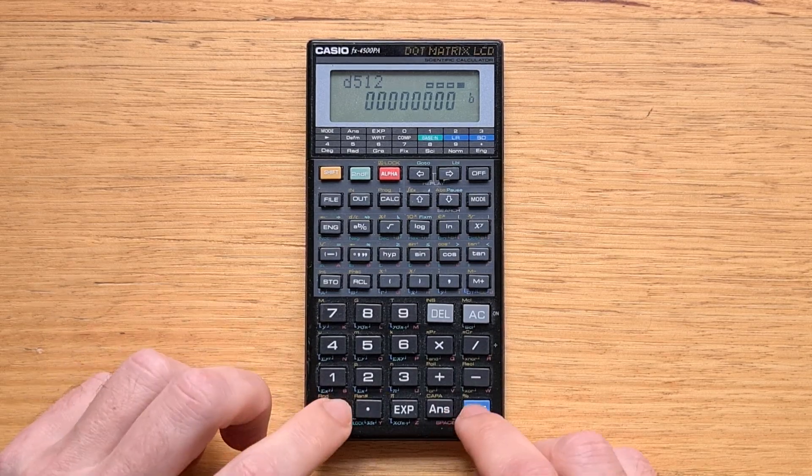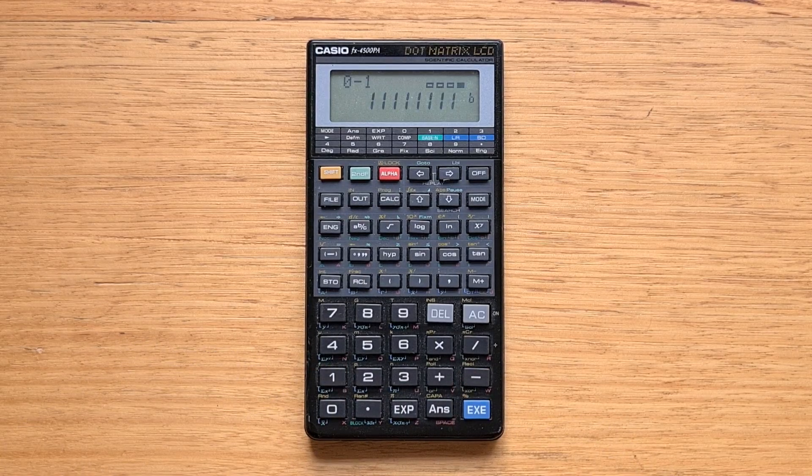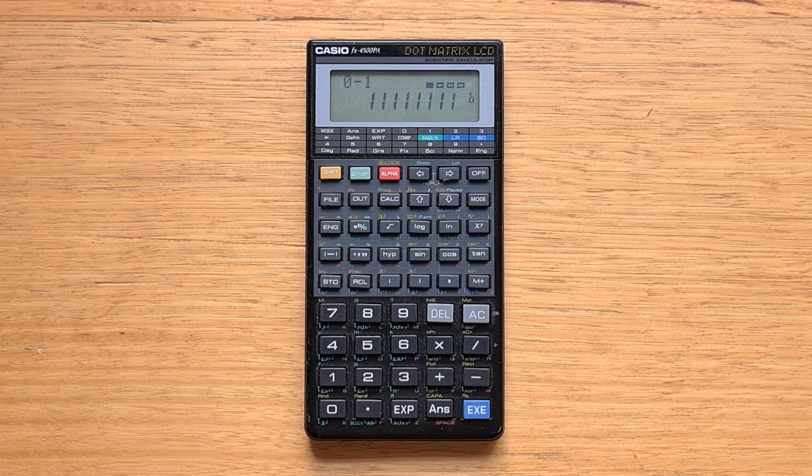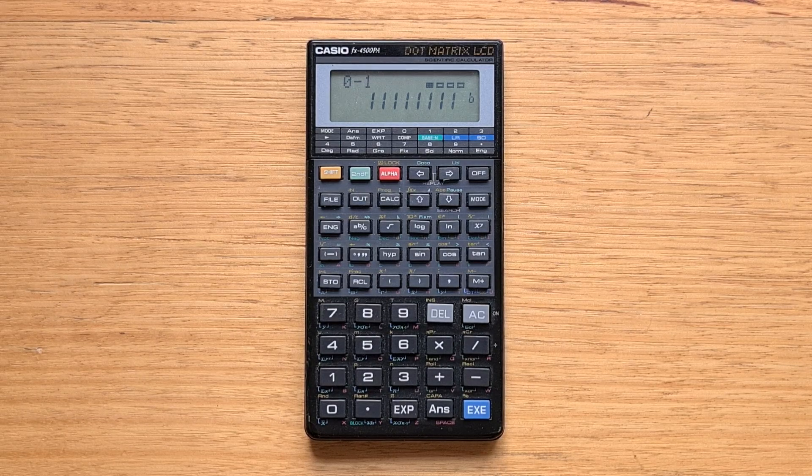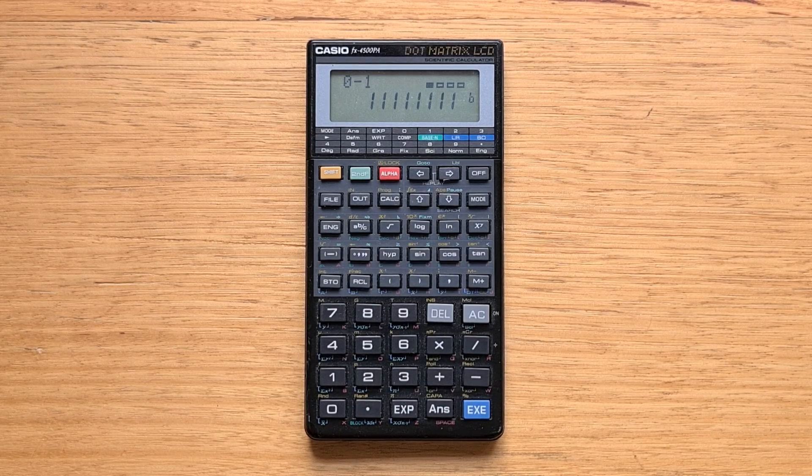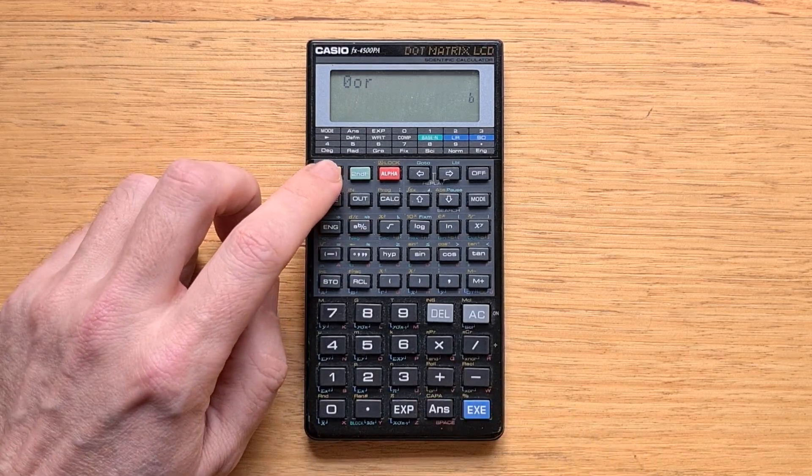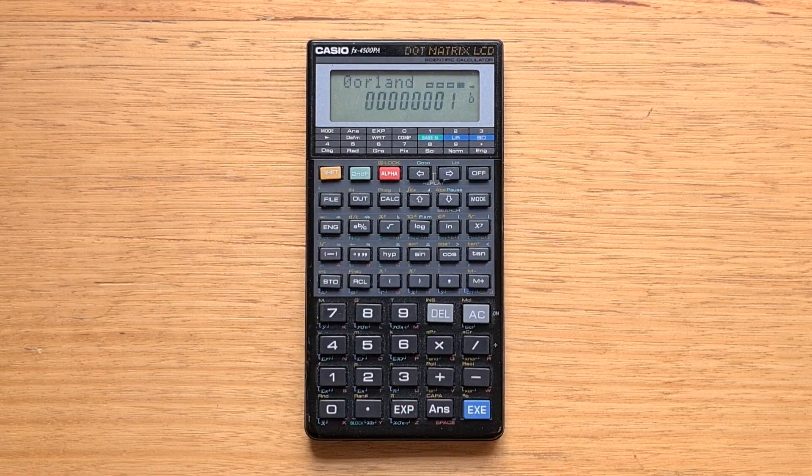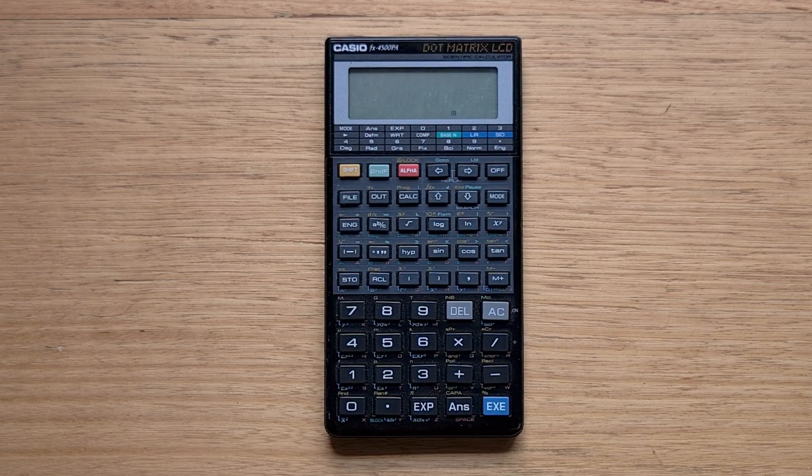It's a bit like the WP34S. If we hit minus 1, we can see that it supports negative numbers with 2's complement. There are also the usual bitwise operations like AND and OR. To enter 0 or 1 and 1, we can enter shift plus to do an OR and shift times to do an AND.